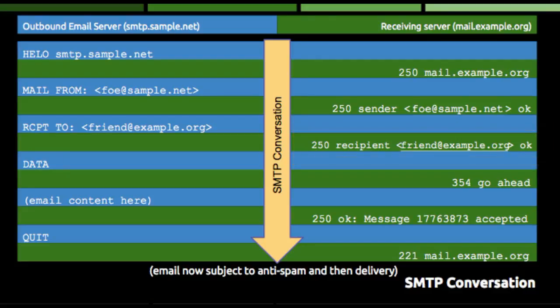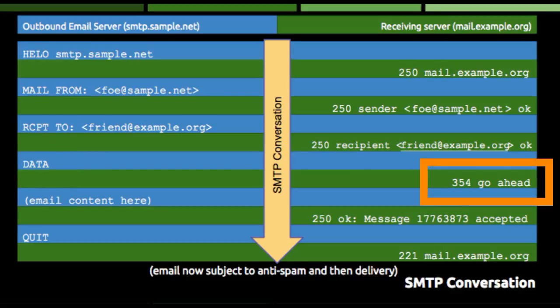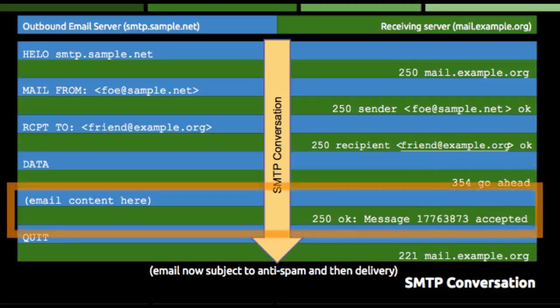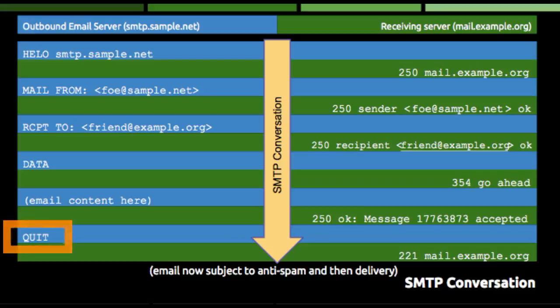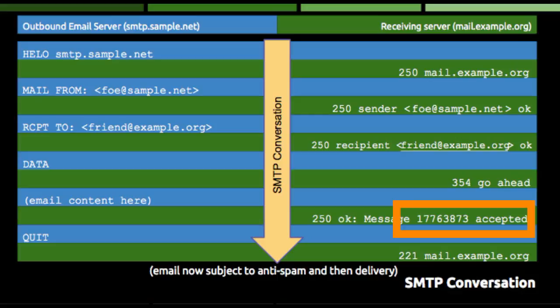To finish off this conversation, the outbound server sends the DATA command to tell the receiver that the actual content of the email is coming up, which the receiver acknowledges with a numeric code of 354. The email content is transmitted and then the outbound server disconnects with the QUIT command. Note that after the email content is delivered, the receiving server can add extra information after the 250 response, which is very useful when humans need to get involved to figure out what happened to a piece of email.